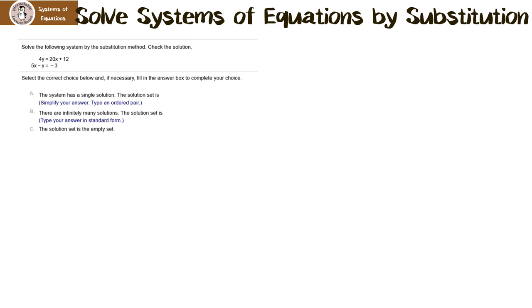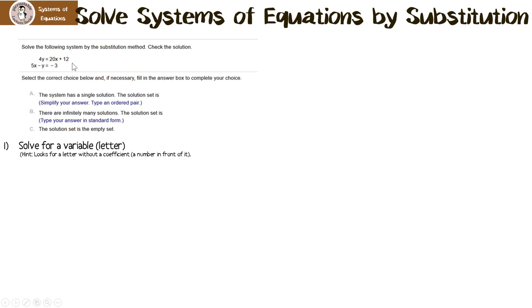Solve the following system by the substitution method. First, look for a variable by itself — we want y equals or x equals. The hint tells us to look for a letter without a coefficient. Looking at the first equation, all we have to do to get y by itself is divide everything by 4. So: 4y equals 20x plus 12, divide everything by 4, and that gives us y equals 5x plus 3. We solved for a variable — y is by itself.